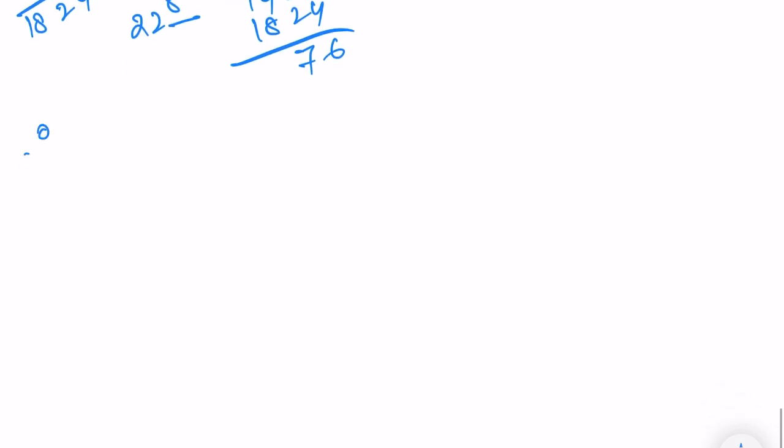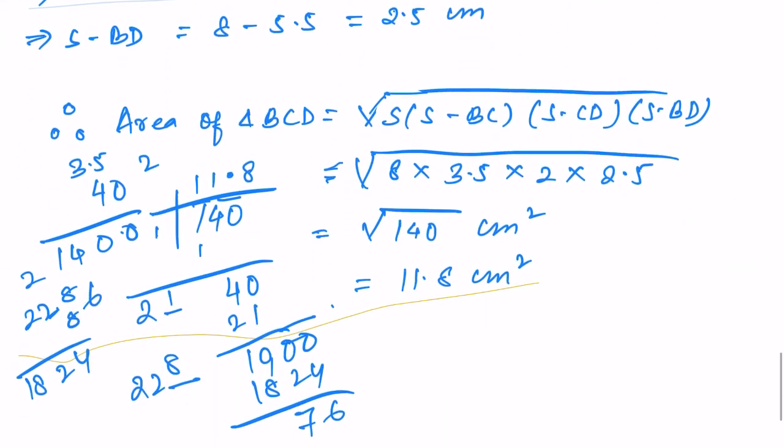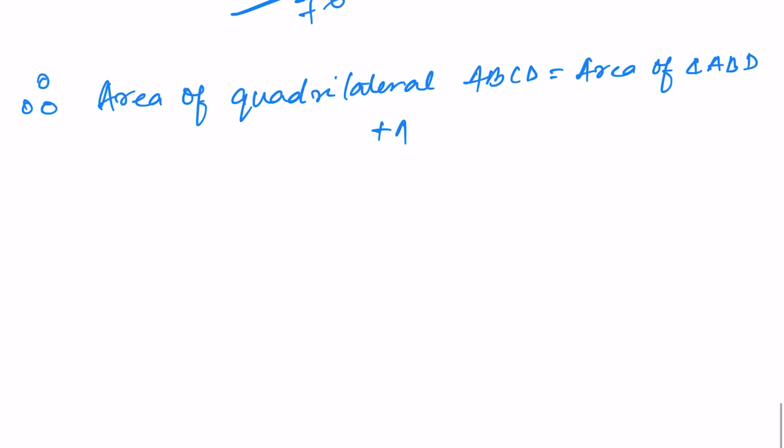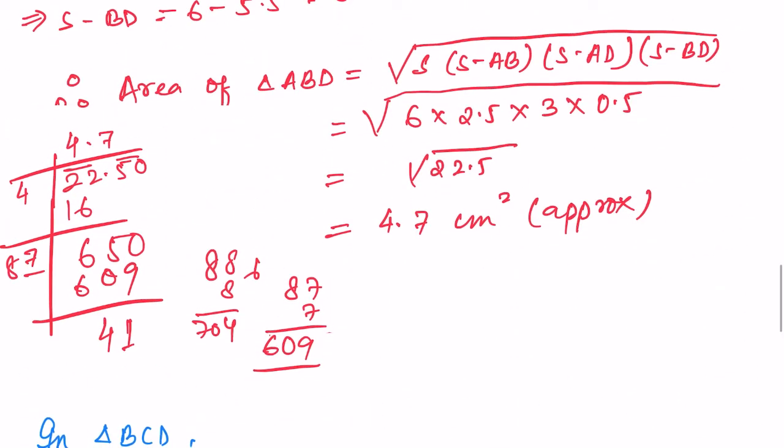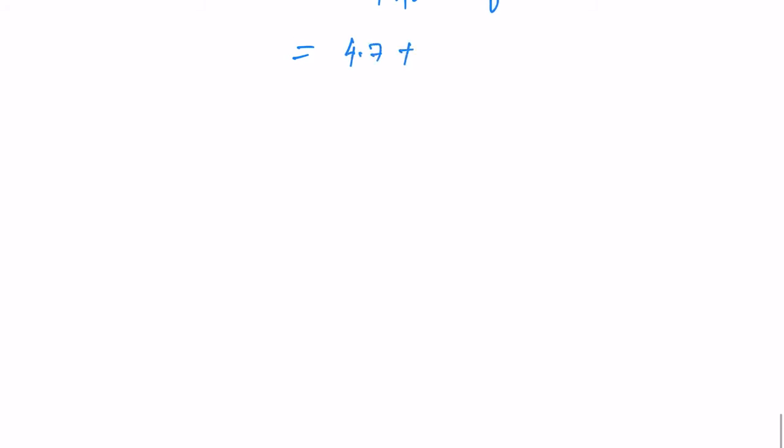So therefore, area of quadrilateral ABCD is equal to area of triangle ABD plus area of triangle BCD, which is 4.7 plus 11.8, equals 16.5 centimeter square, approximately. So that's all. I hope you understood this much. Thank you so much. We will meet in the next video.